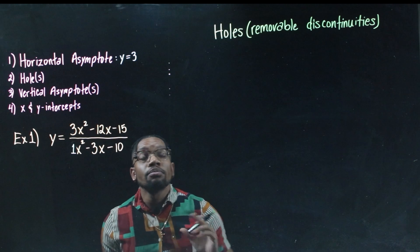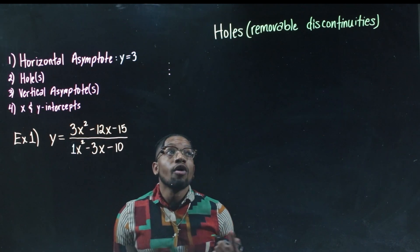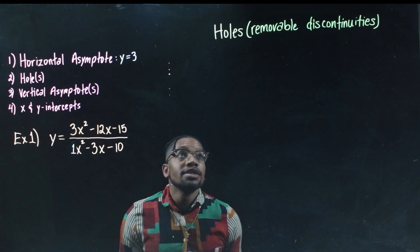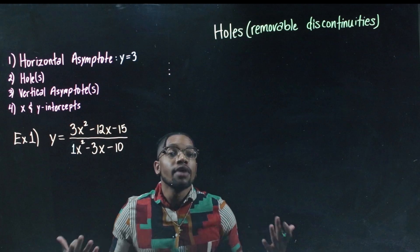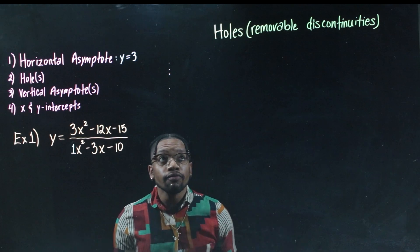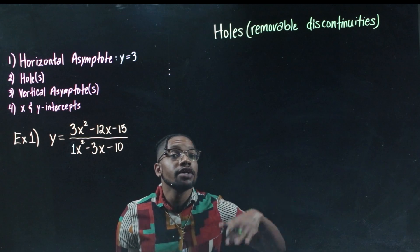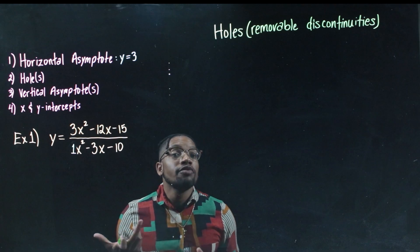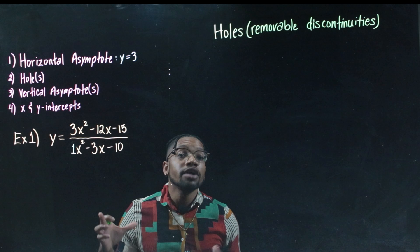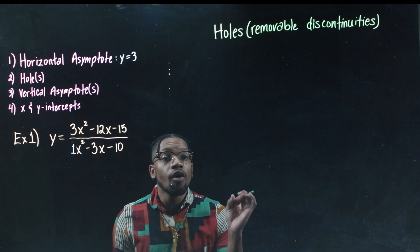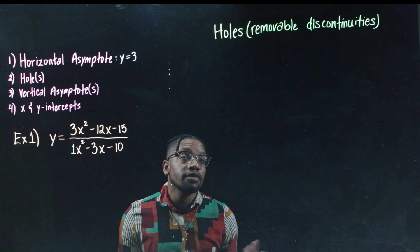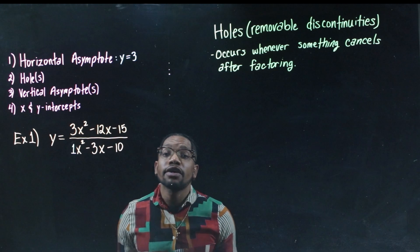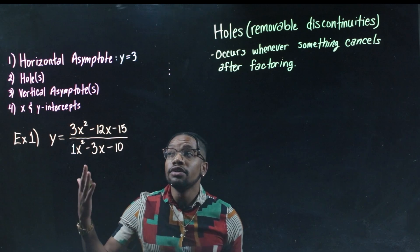Holes — or removable discontinuities — take the most work. Holes exist whenever you factor the numerator and denominator and have factors that cancel out. Whatever x value makes that canceled denominator factor equal zero is the x coordinate of a hole. The best thing you can do is get good at factoring, because you can't graph rationals without it.